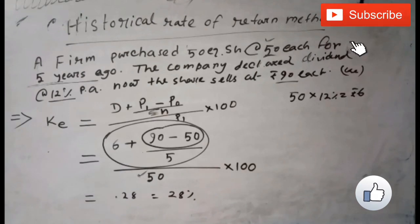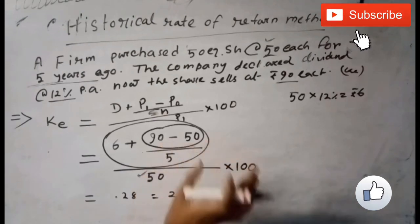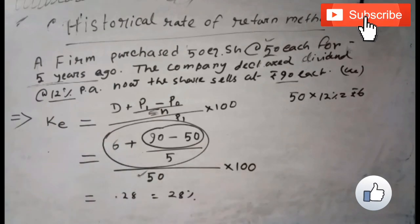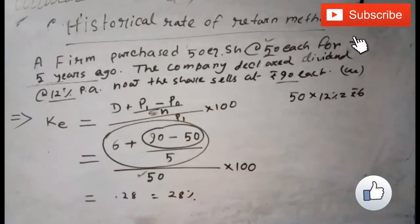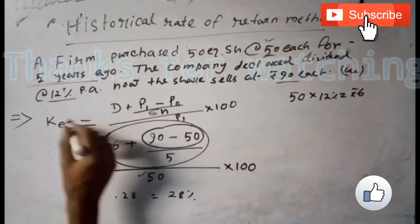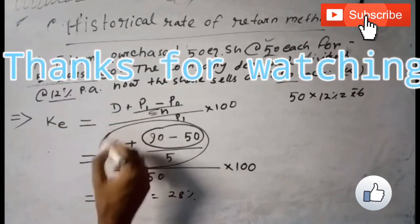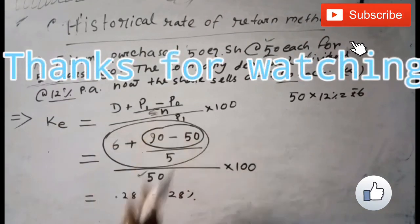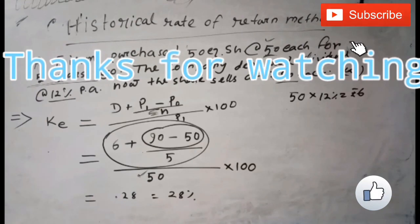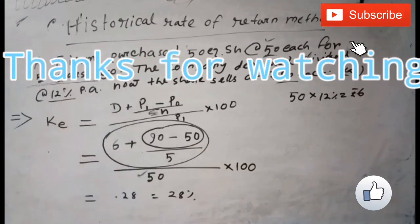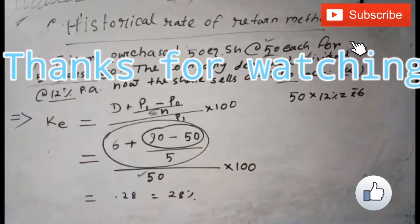So I have simply described what is the historical rate of return method and how you can calculate it without writing the formula. Just visualize this image and you can understand and easily calculate the answer. Thank you.